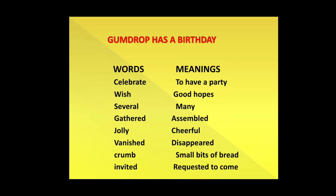First of all, we will do the word meanings of unit number 7: Gumdrop has a birthday. Our first word is celebrate. Celebrate means to have a party. Next word is wish. Wish means good hopes. Third word is several. Several means many. Next word is gathered. Gathered means assembled — A-S-S-E-M-B-L-E-D.